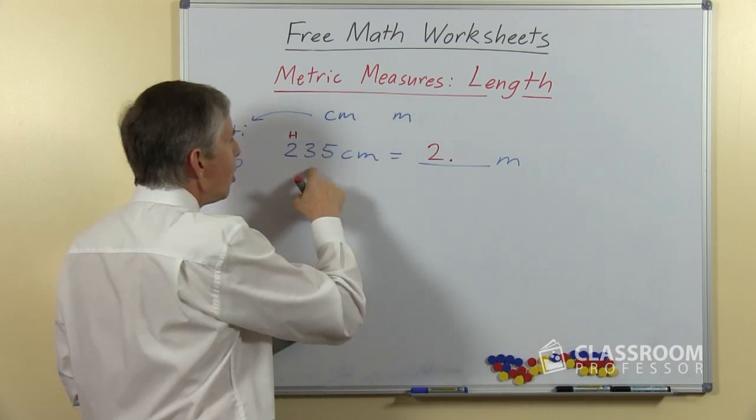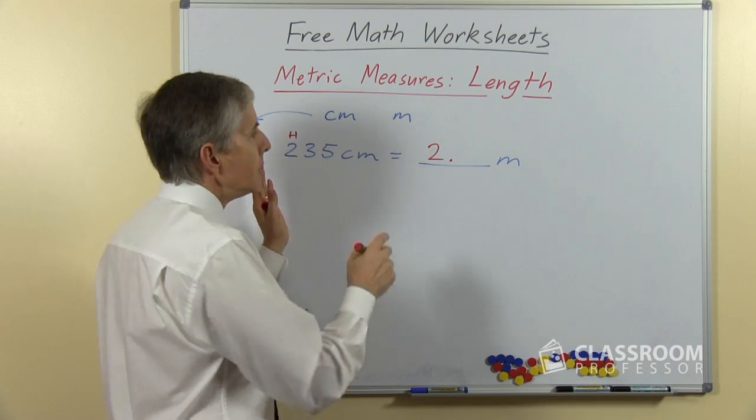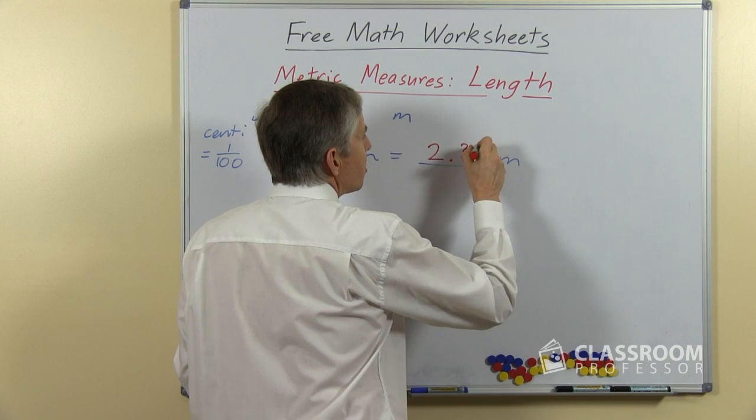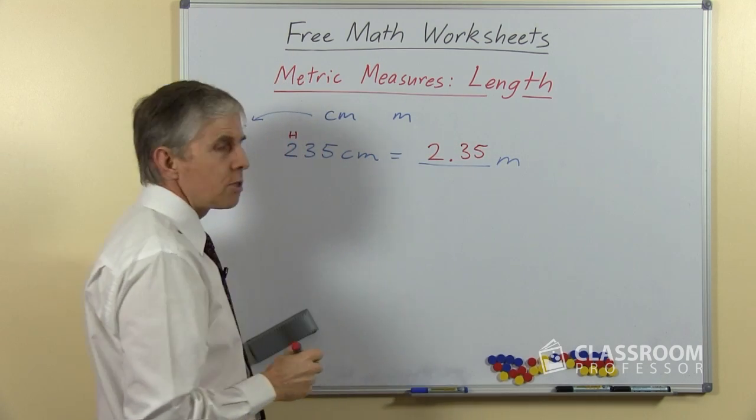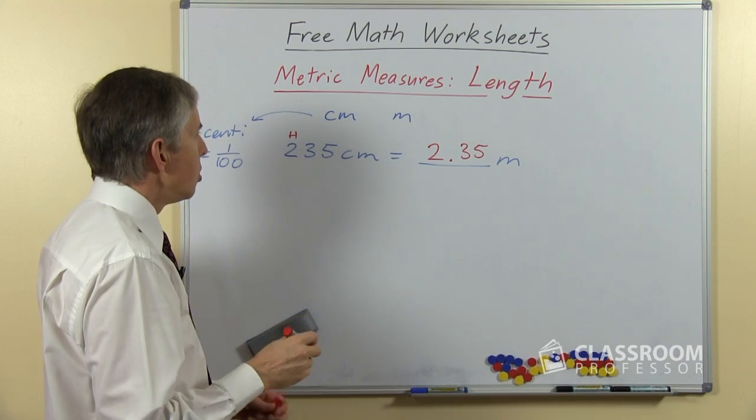We'll need a decimal point. Where will the 3 and the 5 go? If the 2 is now in the ones place, the 3 and the 5 must be after the decimal point and it's 2.35 or 2 and 35 hundredths of a meter.